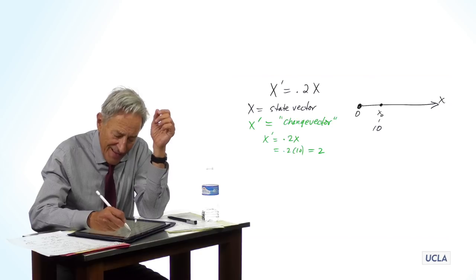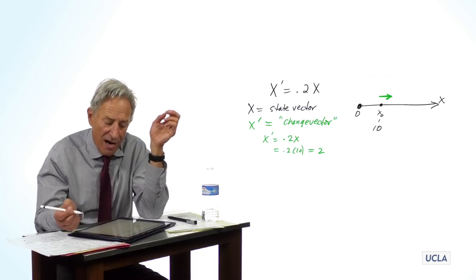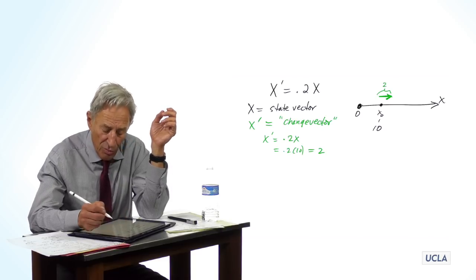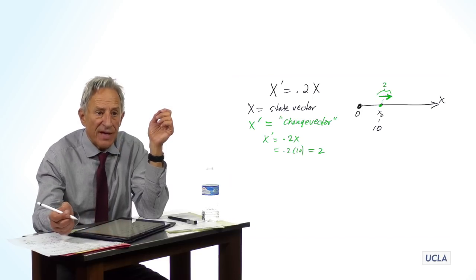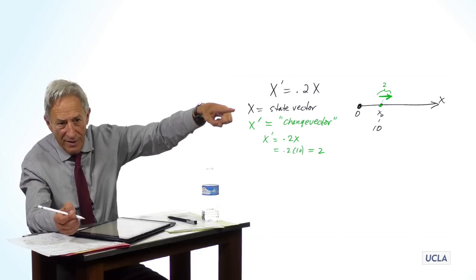We will represent that by taking a change arrow of length 2 and putting it at that state point x0, like a one-way sign pointing.